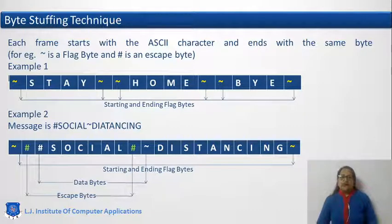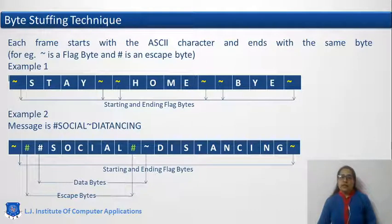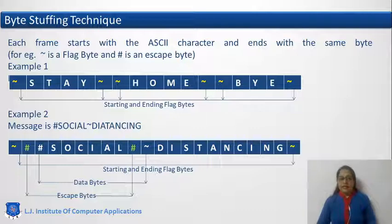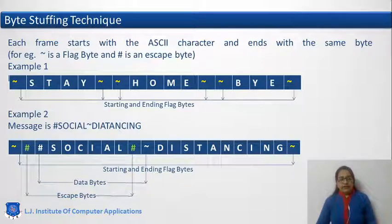That problem is overcome in the second technique: byte stuffing. To solve the problem of the character count technique, a special byte called a flag byte is stuffed at the start of the frame and the same flag byte is stuffed at the end of the frame. For example, suppose we have a message 'stay home and bye,' forming three frames — 'stay,' 'home,' and 'bye.' Before and after each frame we insert a flag byte, here using the tilde sign. Most devices use this tilde character. So tilde at the start, tilde at the end, and the same for the second and third frames.